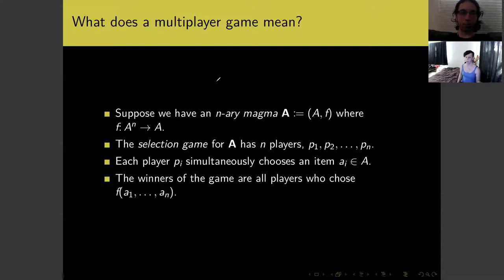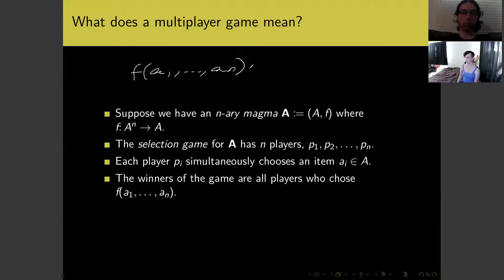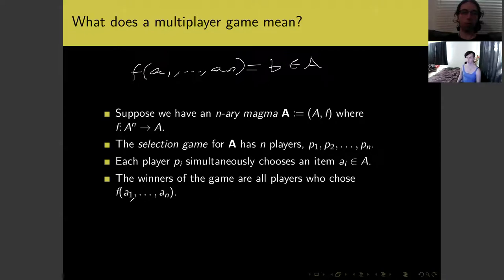The game of rock, paper, scissors can be viewed as a magma — a set with a binary operation on it. Now suppose we have an n-ary magma, which is a set equipped with a function F taking n-tuples of elements a₁ through aₙ to some other element. We can think of that as a selection game: there are n players p₁ through pₙ, each simultaneously choosing an item aᵢ from the set of available elements. The winners are all players who chose F(a₁, ..., aₙ).